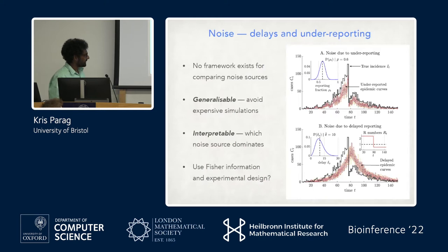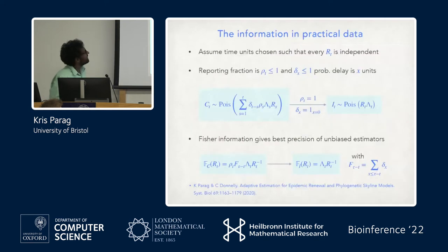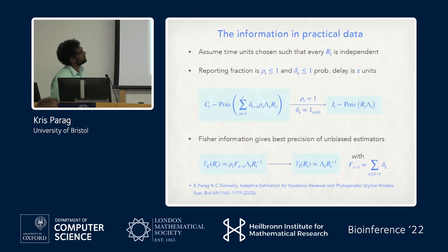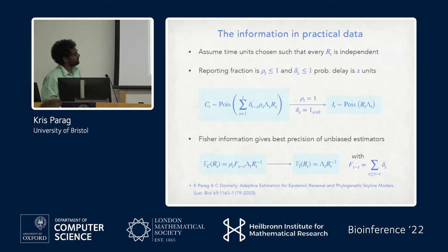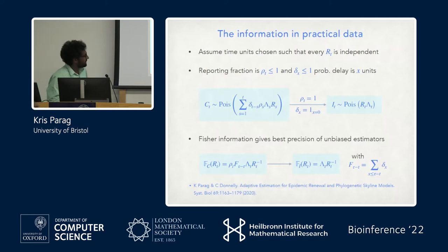We want something interpretable, so our approach is to look at what Fisher information and statistical experimental design might provide. We make one key simplifying assumption that makes the math tractable: we assume that every R(t) can be treated as more or less independent. You can do that for COVID by taking a weekly time unit. We define reporting fractions rho and delay probabilities — the probability of a delay of x time units.